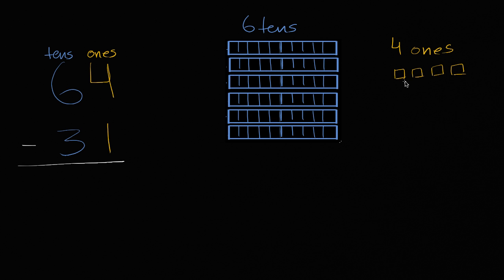60 of these blue ones, and I have four ones. Four of these individual ones. Now, I want to take away 31. Well, what is 31?